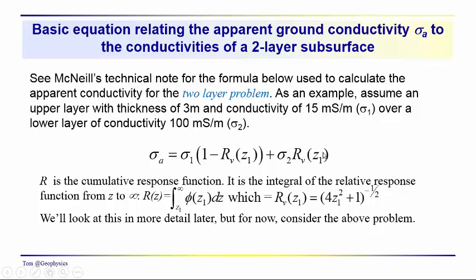The apparent conductivity that we calculate is a weighted combination of sigma one and sigma two. The weighting factors are these terms that you see here in parentheses, and notice that we have the cumulative response function R in each one of these terms.